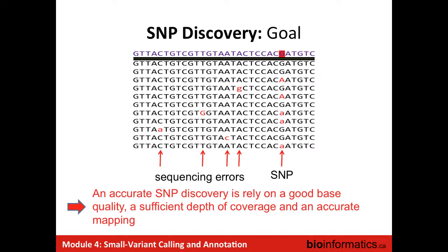Where it starts to be a little bit trickier is you want to find true variant positions but not false ones. As I said yesterday, what is really important to do good SNP calling is to have good base quality — to trust your bases and reduce the amount of possible errors. As you can see here, with around 10x coverage, it's clearly easy to see what is a SNP and what is not.